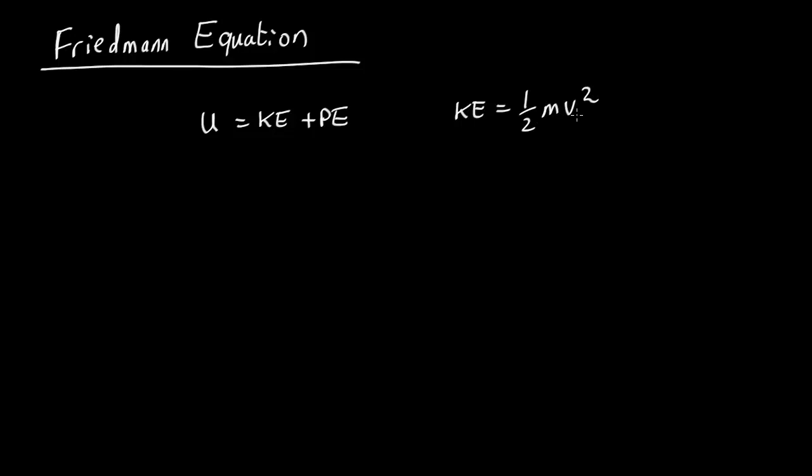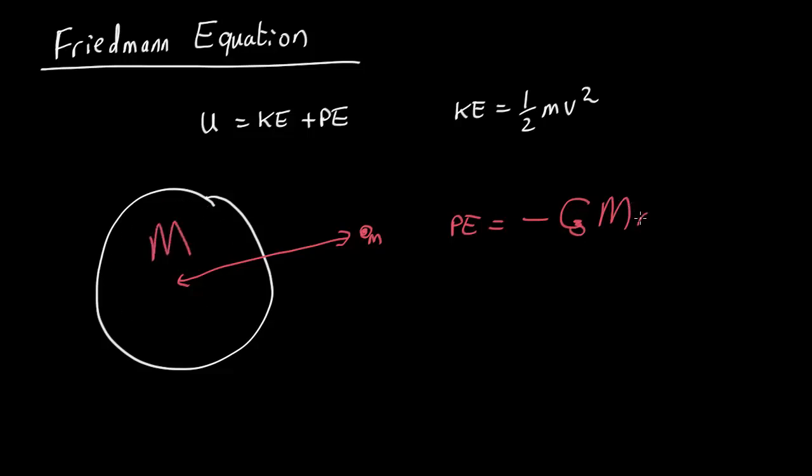The potential energy is a bit harder. Let's imagine we've got some spherical distribution of mass and an object of mass m up here. What's its potential energy? This was originally worked out in Newtonian physics. If you know the distance from the center of mass to the object, the potential energy is just negative G times mass of the spherical distribution times mass of the small thing over r, where r is the distance from the center of gravity.